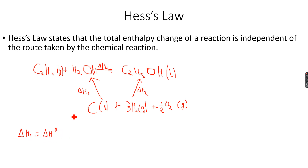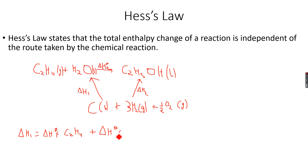Delta H1 is nothing but the sum of the standard enthalpy changes of formation of C₂H₄ plus the standard enthalpy change of formation of water, because we are going from the elements to one mole of the compounds. So it is simply the standard enthalpy change of formation of ethane plus the standard enthalpy change of formation of water.